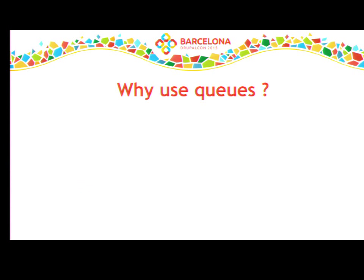The first question is: why do we want to use queues? When visitors are performing actions that take some time, it's reasonable to put those jobs into a queue, display something like 'your request is in progress,' and then show the results after the job is processed. That way they're not just waiting for something to happen or not happen — it's very important for user experience.